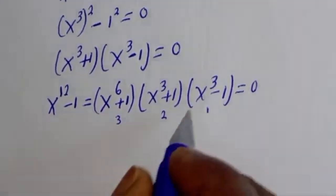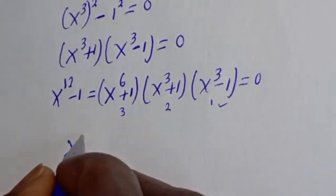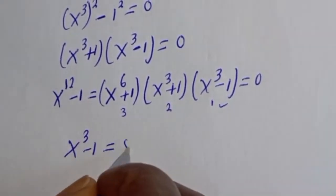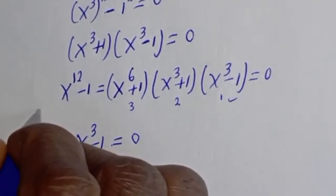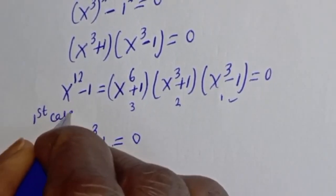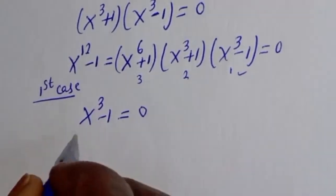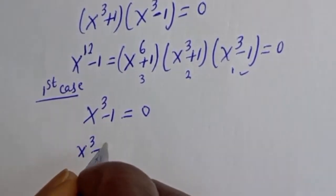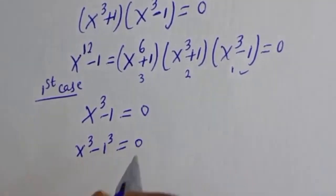Let's start with Case 1: s raised to power 3 minus 1 is equal to 0. This can be written as s raised to power 3 minus 1 raised to power 3 is equal to 0.